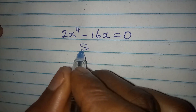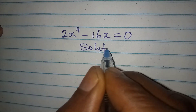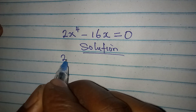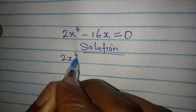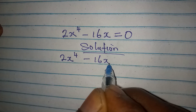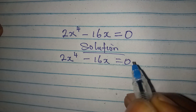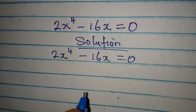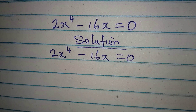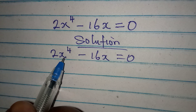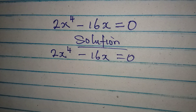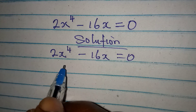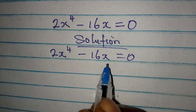Let's provide the solution to this problem: 2x to the power 4 minus 16x equals 0. We are going to provide the complete solution, and because this has a degree of 4, we are expected to have four solutions. So let's keep going.